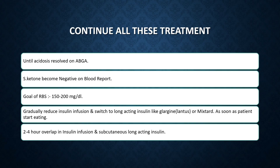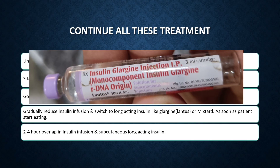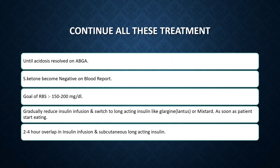Gradually reduce the insulin infusion as per the patient's condition and RBS level, and switch to long-acting insulin like Glargine (brand name Lantus) or Mixtard as soon as the patient starts eating. An important overlap of 2 to 4 hours between the insulin infusion and subcutaneous long-acting insulin is essential. This is all about the management of DKA. Thank you.